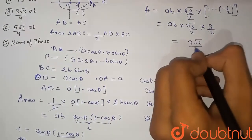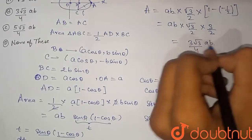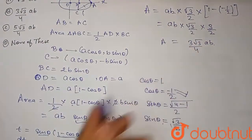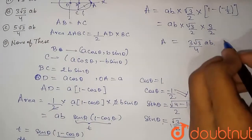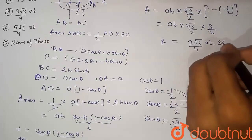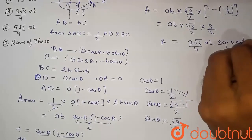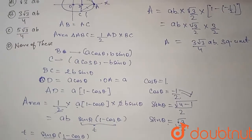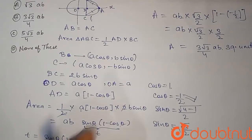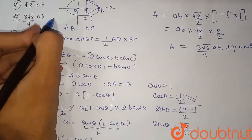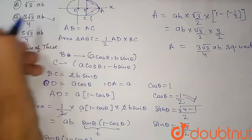So the maximum area is 3√3ab/4 square units. This matches option B: 3√3ab/4. The final answer to this question is option B.